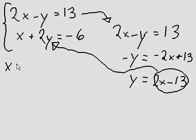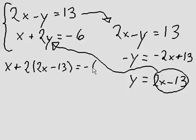So we have x plus 2 bracket, 2x minus 13 equals negative 6. It's always nice to plug it in with brackets around the expression that we're replacing with. So now this is just basically an easy algebra equation that we can solve.